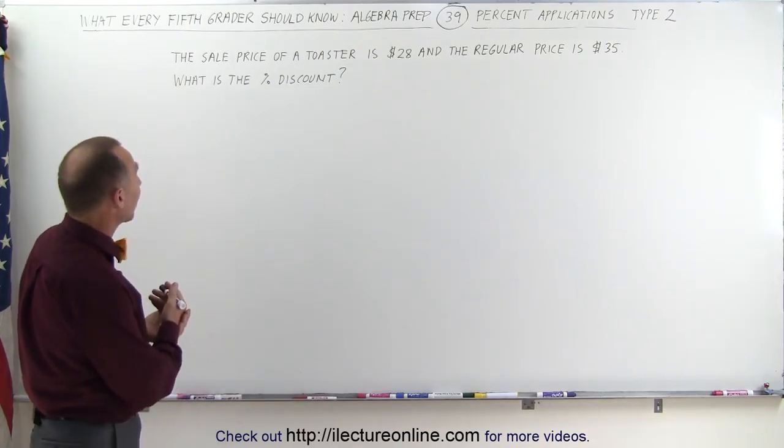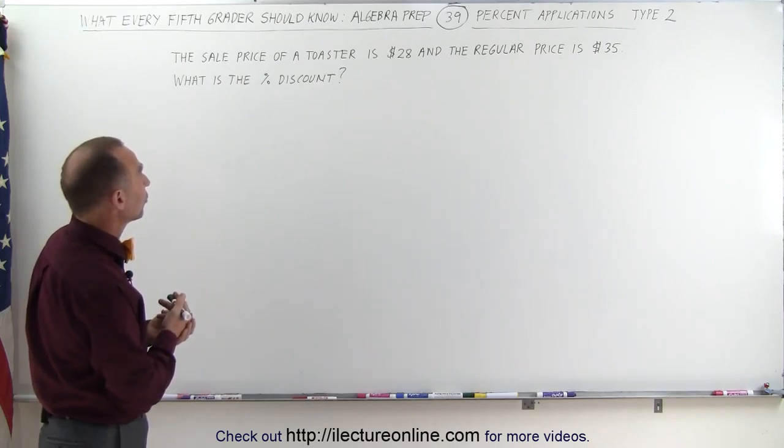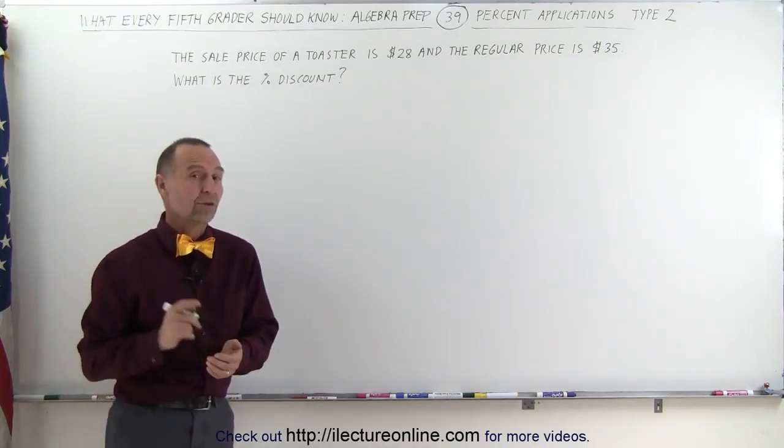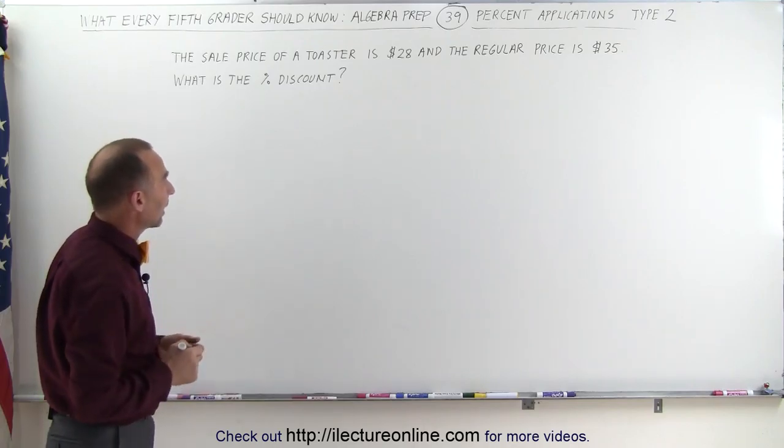The example here says that we have a toaster whose sale price is $28 and the regular price of that toaster was $35. What is the percent discount?